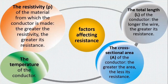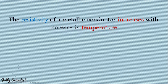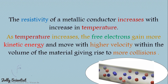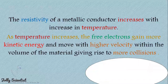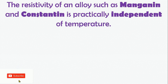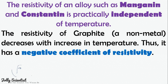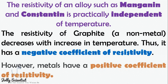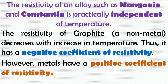And finally, the temperature of the conductor. The resistivity of a metallic conductor increases with increase in temperature. As temperature increases, the free electrons gain more kinetic energy and move with higher velocity within the volume of the material, giving rise to more collisions. The resistivity of alloys such as manganin and constantan is practically independent of temperature. The resistivity of graphite, a non-metal, decreases with increase in temperature, so it has a negative coefficient of resistivity. However, metals have a positive coefficient of resistivity.